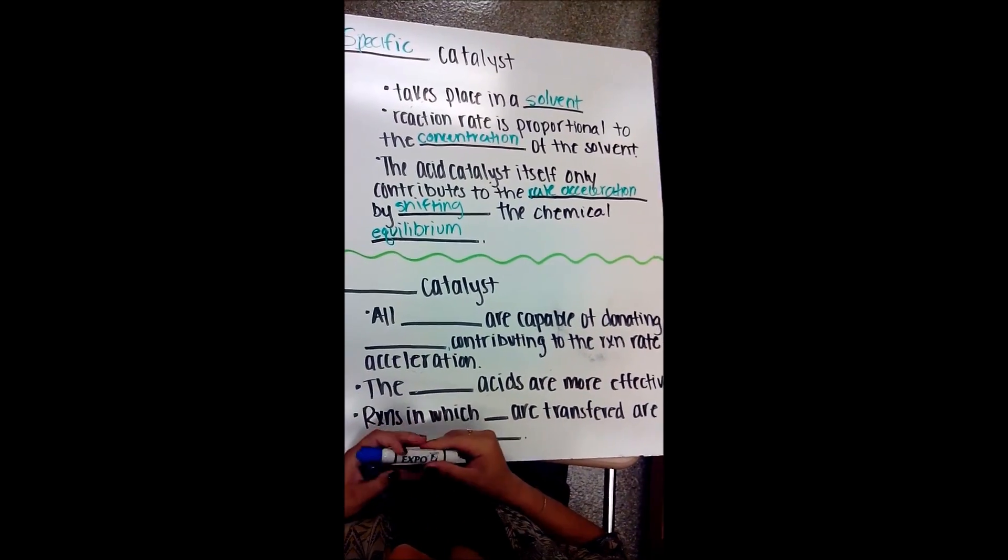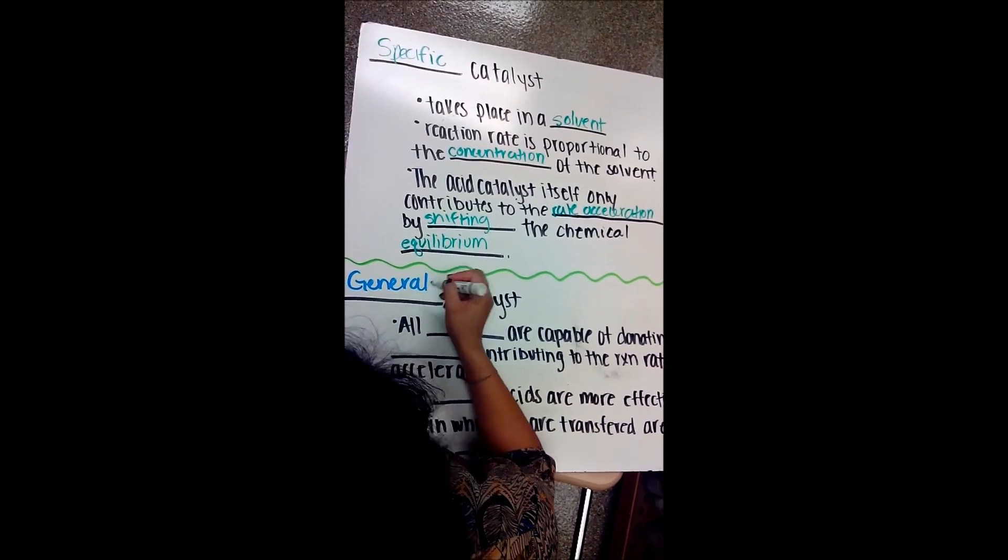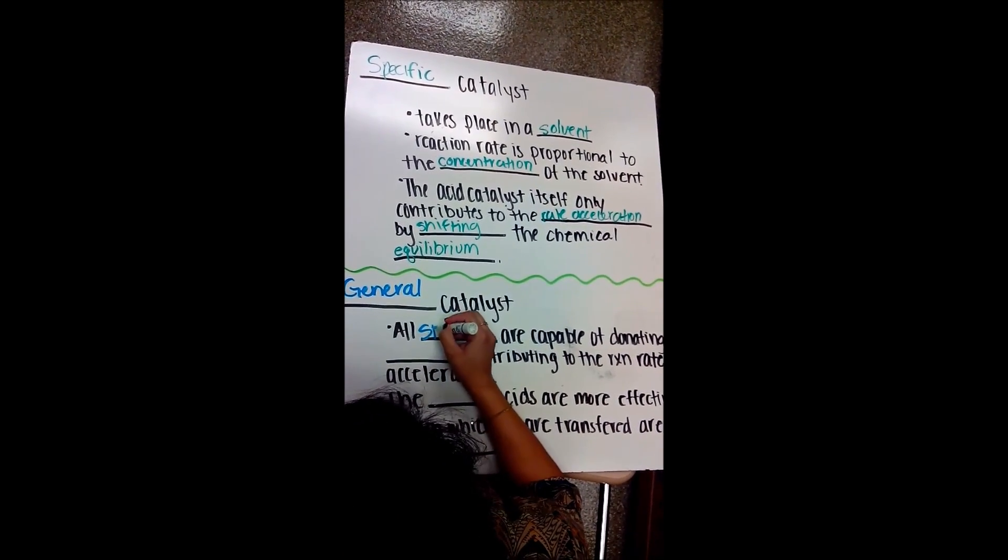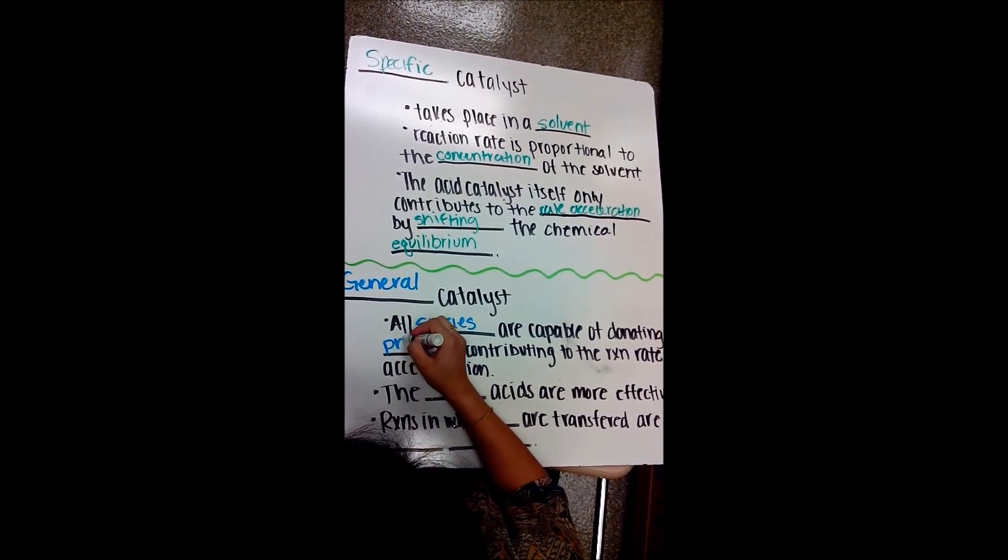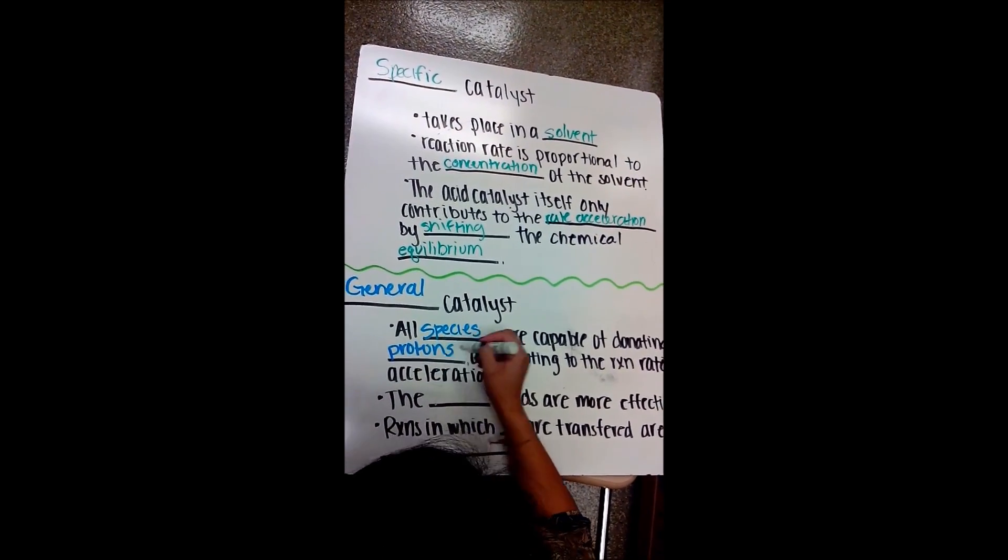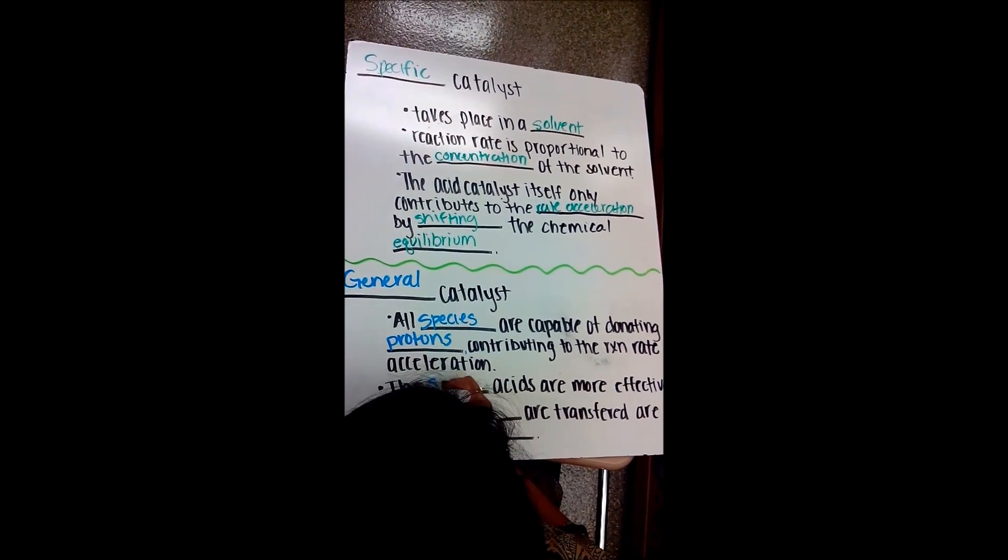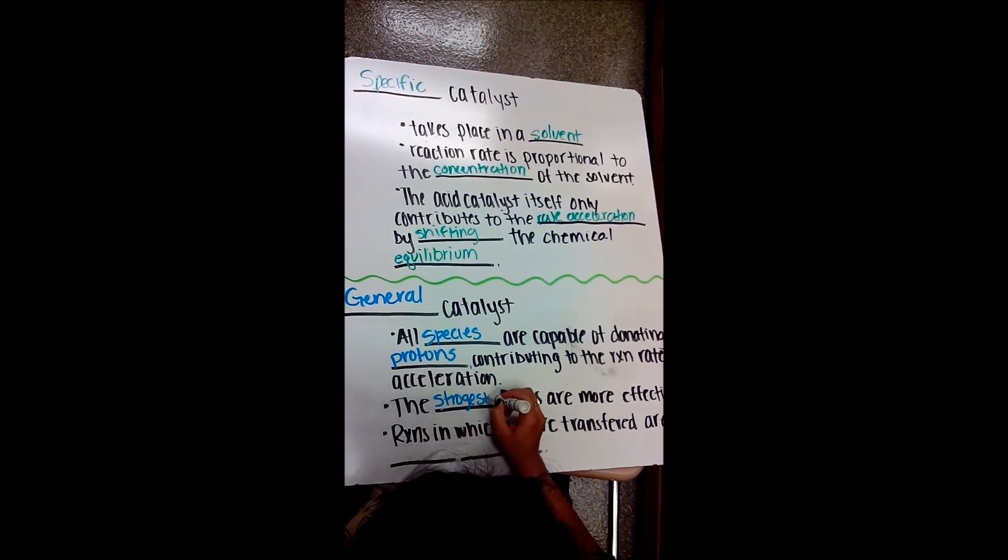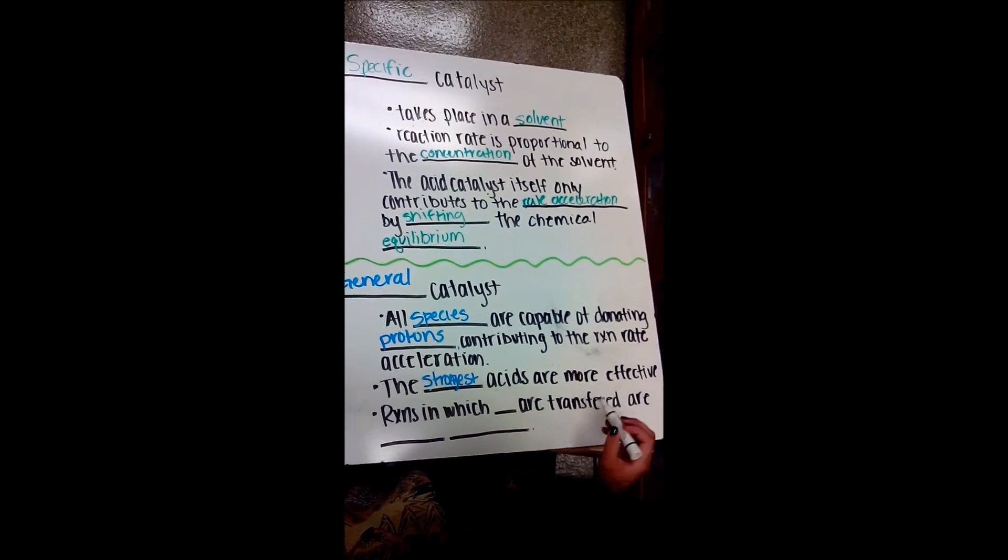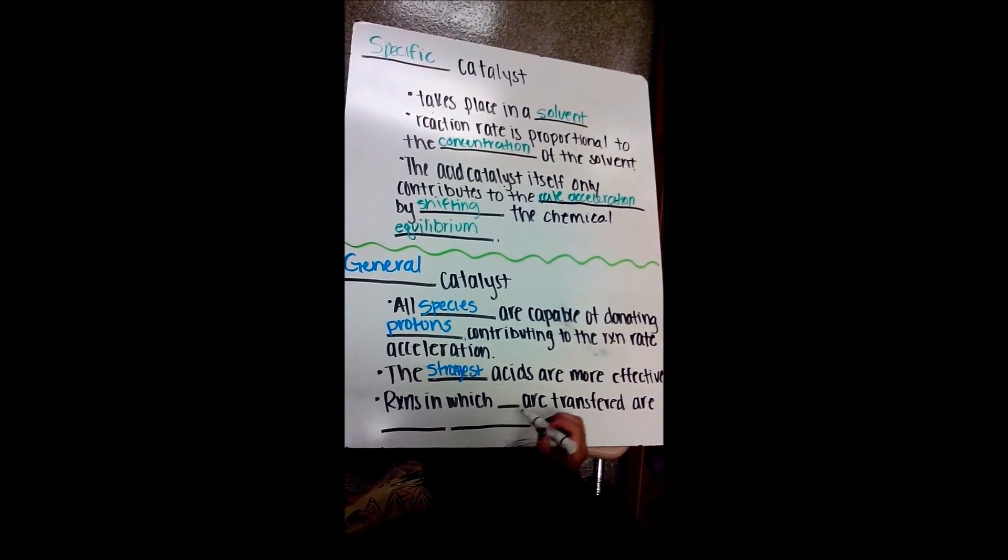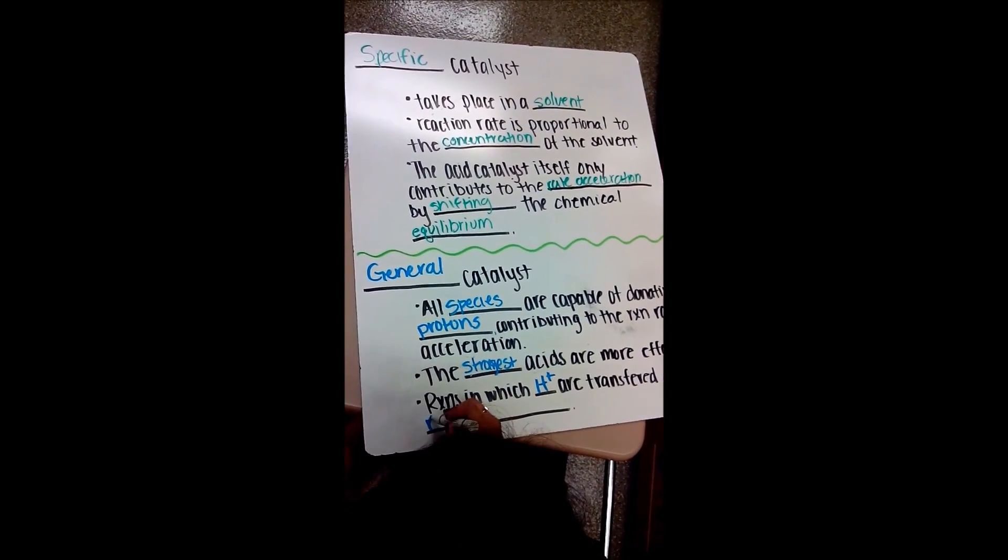The second type of catalyst is a general catalyst. All species are capable of donating protons, contributing to the reaction rate acceleration. The strongest acids are more effective. The reactions in which H plus are transferred are rate determining.